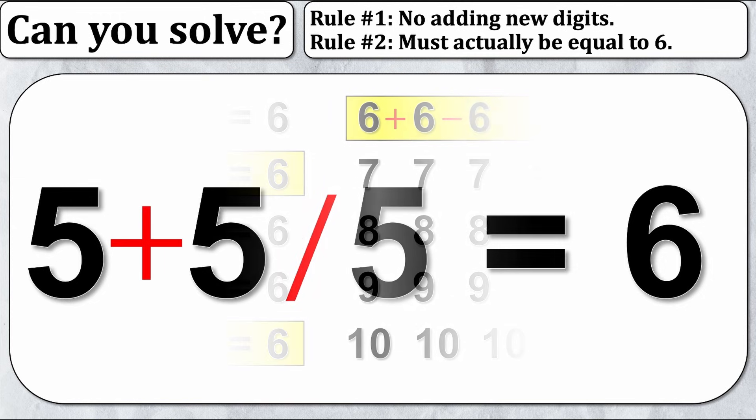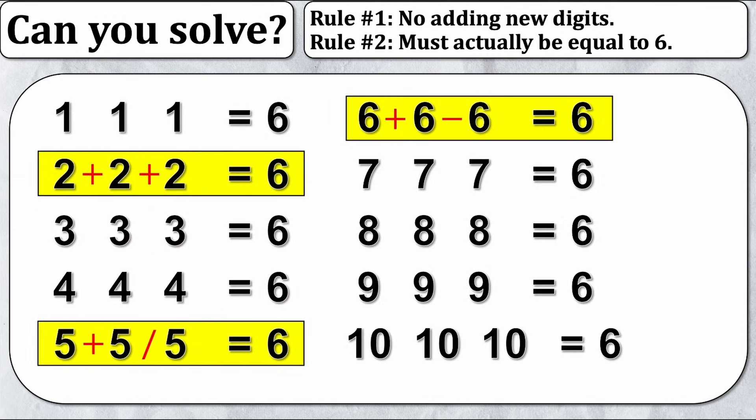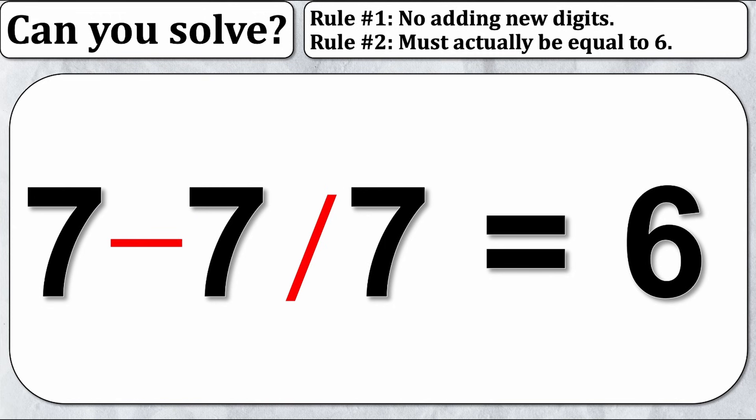Along those same lines you can actually do seven a very similar way, because seven would just be seven minus seven over seven. Seven divided by seven is one, and seven minus one is six.